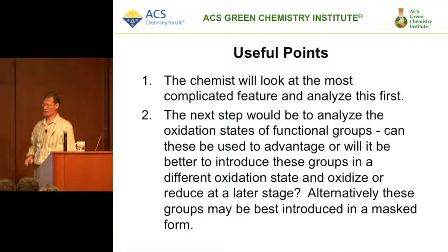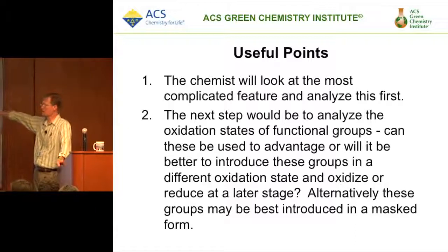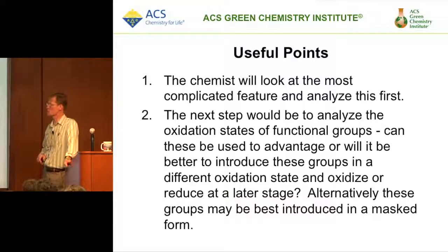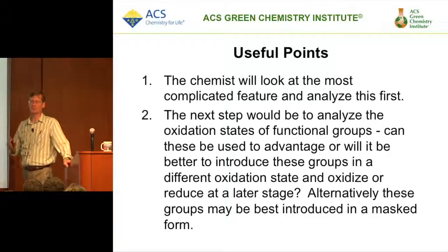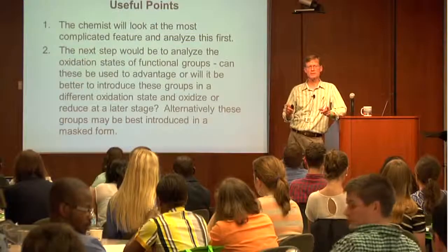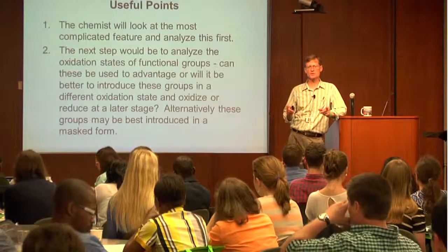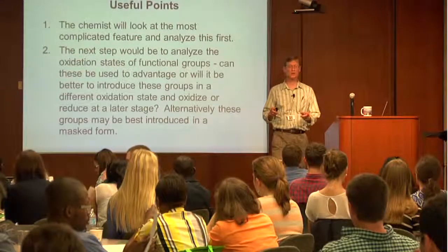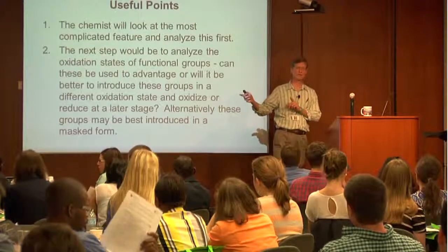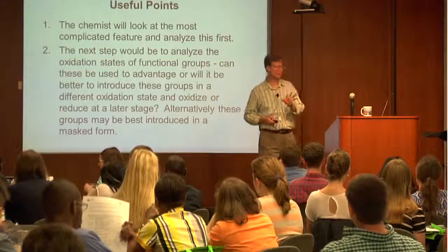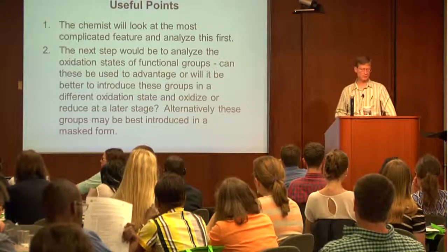Think carefully about oxidation states in the overall synthetic scheme — this is really important. If you need to do a chiral synthesis and chiral resolution, the order in which you do that resolution makes a big difference. If you do the chiral resolution as early as possible, you will have a much more mass-efficient reaction than if you do it late stage, because you build up a larger portion of the molecule. Ideally, if everything could be done by asymmetric catalysis, that would be the best way to build a chiral molecule.